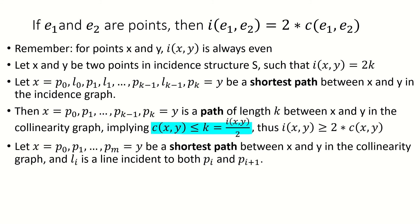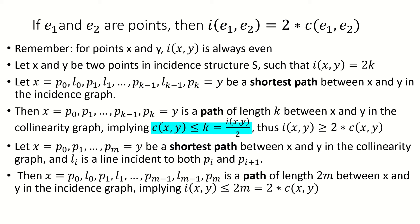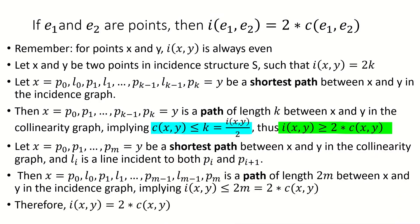Next, if x = p₀, p₁, …, p_m = y is the shortest path of length m between x and y in the collinearity graph, and l_i is a line incident to consecutive points p_i and p_{i+1}, then x = p₀, l₀, p₁, l₁, …, p_{m-1}, l_{m-1}, p_m = y is a path between x and y in the incidence graph of length 2m. This shows I(x,y) ≤ 2·C(x,y). Combined with the earlier inequality, this proves that for a pair of points x and y, I(x,y) = 2·C(x,y).